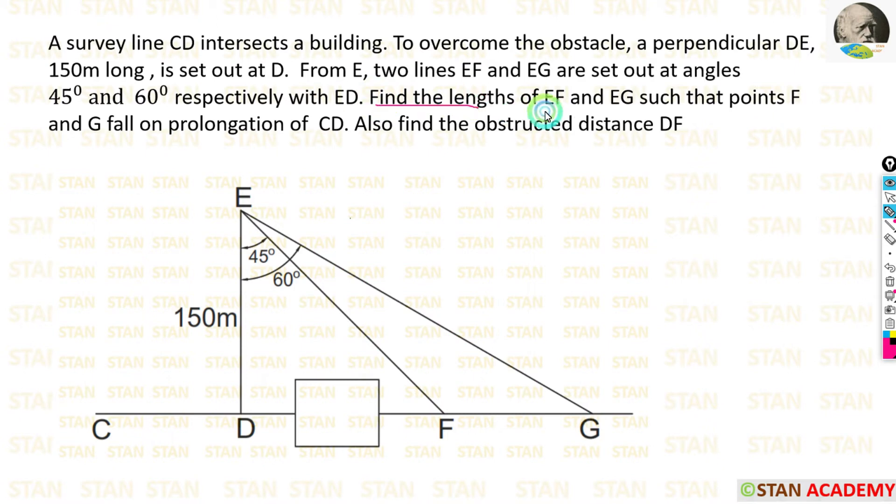Find the lengths of EF and EG such that the points F and G fall on prolongation of CD. It is clearly given in the question the points F and G are falling on the prolongation of CD. That means they are in the same line. In this question we have to find out the length of EF, EG, and also we have to calculate the obstructed distance DF.